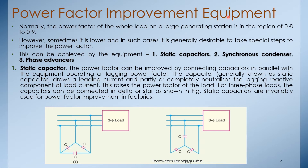The power factor of the whole load on a large generating station is normally in the range of 0.8 to 0.9. However, sometimes it is lower, and in such cases it is generally desirable to take special steps to improve the power factor.